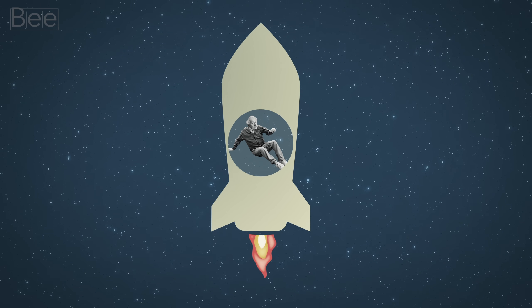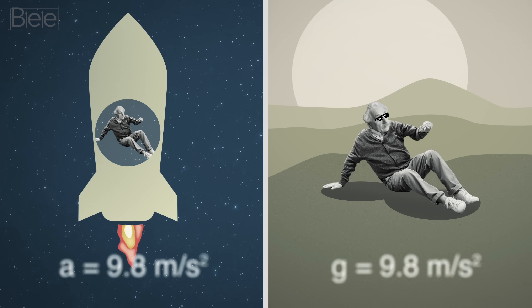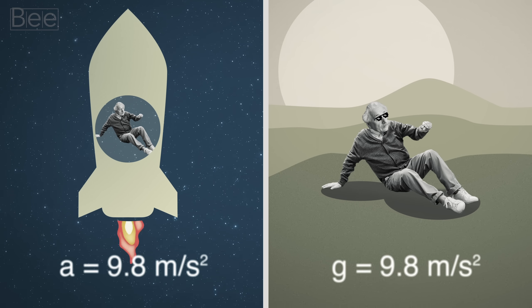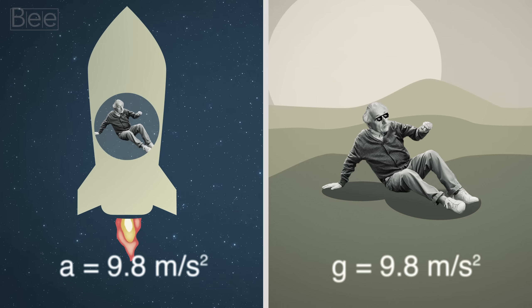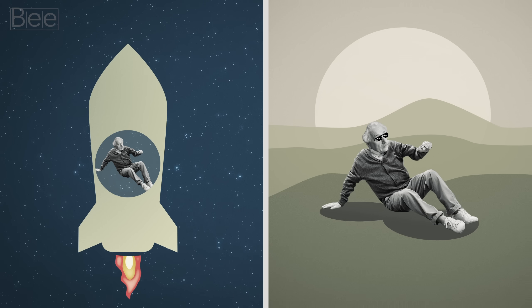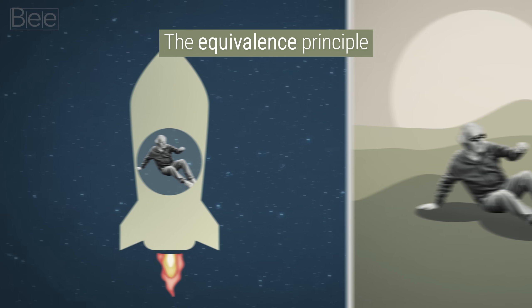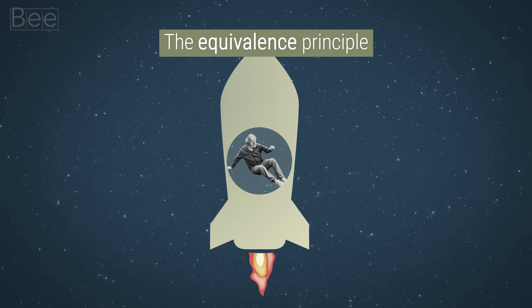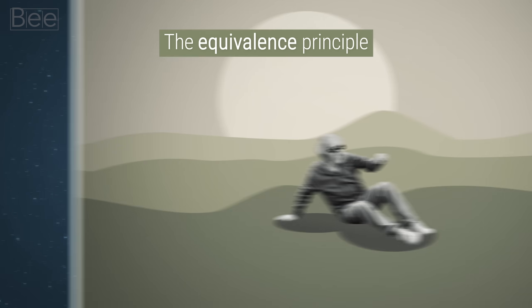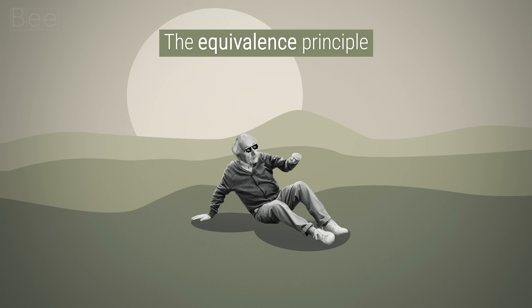Einstein realized that the observer would not be able to tell if he is on a spaceship or on the surface of the Earth. That is because he would be moving at the exact same rate of acceleration. There would be no way to tell the difference. This phenomenon is called the Equivalence Principle, which states that an object that is accelerating free of any gravitational pull is essentially no different than the same object that is stationary but affected by gravity. In other words, something moving in space with no gravity has the same mass as something on Earth that is not moving.